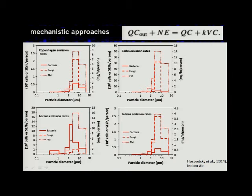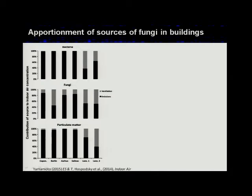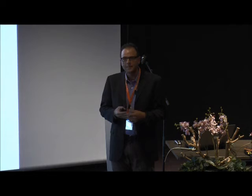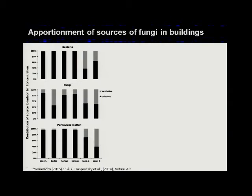An example of mechanistic approaches: these are emission rates in schools in Europe and the United States — Salinas, California; Denmark; and Germany — for bacteria, fungi, and PM. These are the number of cells emitted per person per hour in a school room, derived by backing things out of a mass balance. We measure what's in the outside air, measure ventilation rates, measure inside air, know something about deposition, and put these processes together in simple or complex models to back out emission rates. The reason emission rates are important is because they're big: in the schools we looked at, 99% of the microbes people were exposed to in air came from resuspension, not from outdoor air being ventilated in.